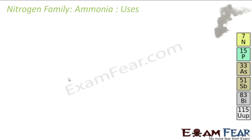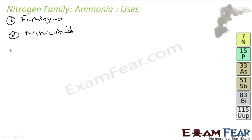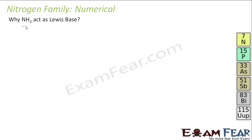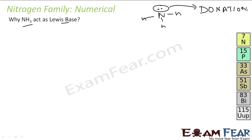Now we talk about the uses of ammonia. The primary use is in fertilizers. It is also used to prepare nitric acid, which is a very common acid in industry. Additionally, liquid ammonia is used as a refrigerant. NH3 is a Lewis base because it has an extra lone pair of electrons available for donation — for example, NH3 interacts with BCl3 and donates the electron pair.